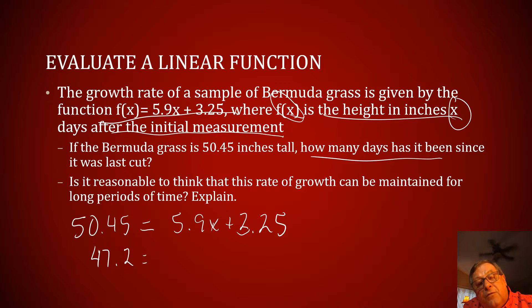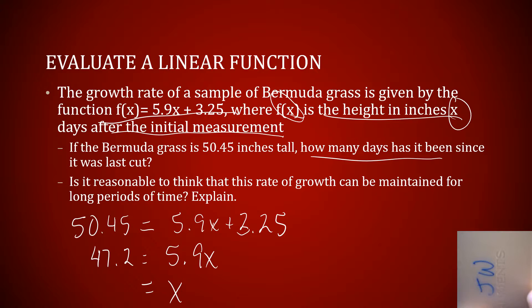And that's equal to 5.9x. Well, why don't we divide both sides of this equation by x, and we'll get something for the days. 47.2 divided by 5.9, and that's 8 days.